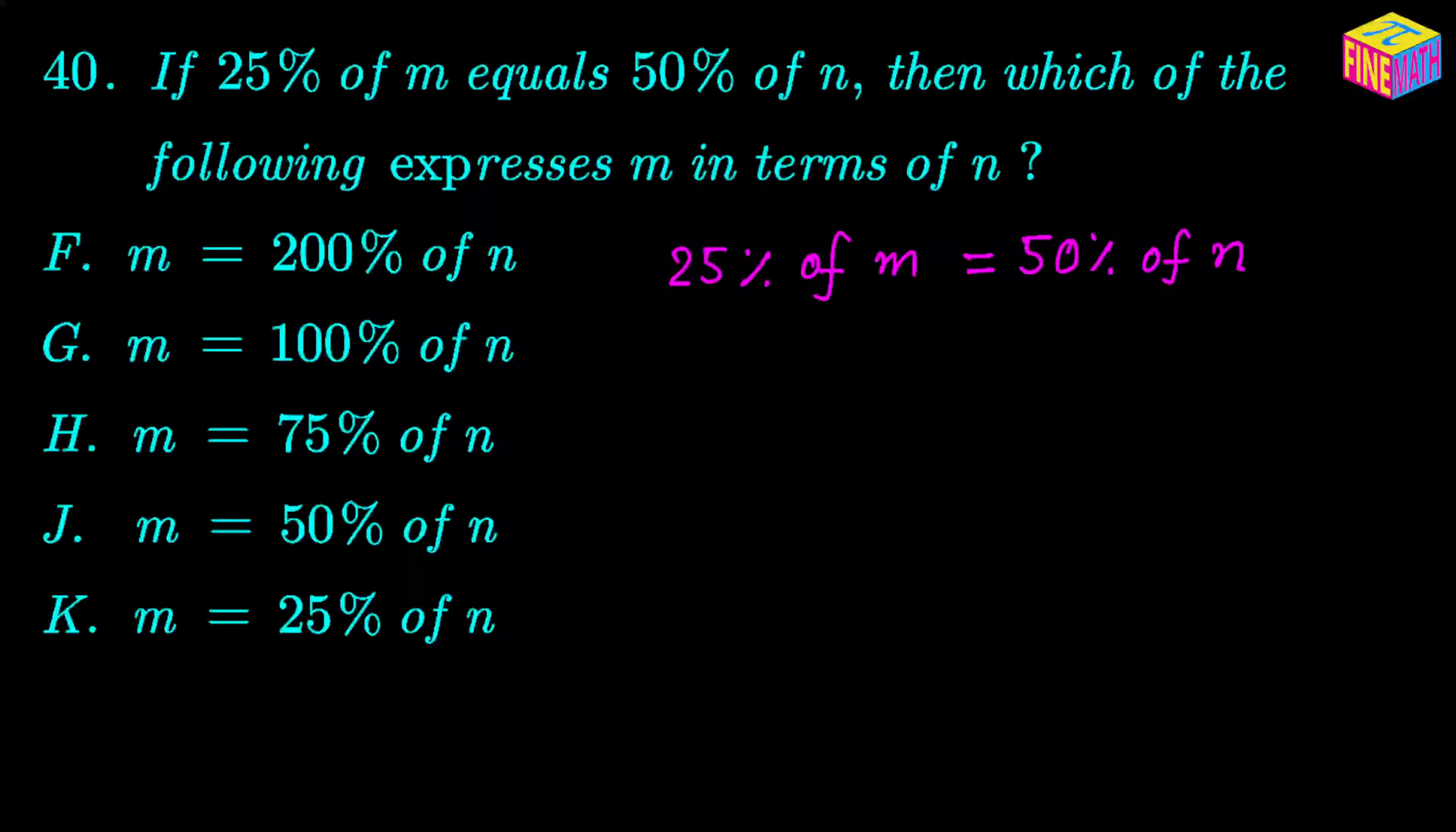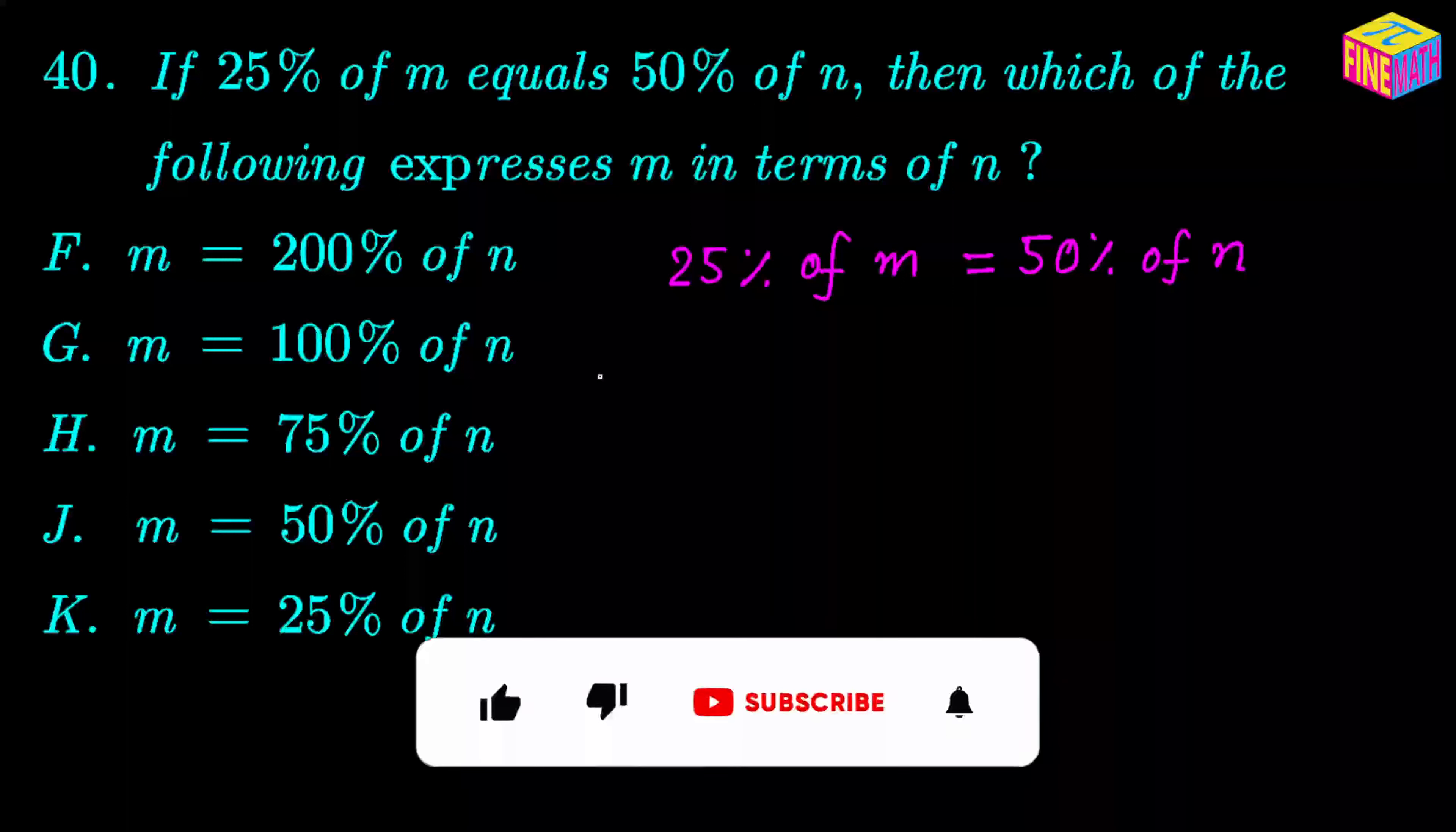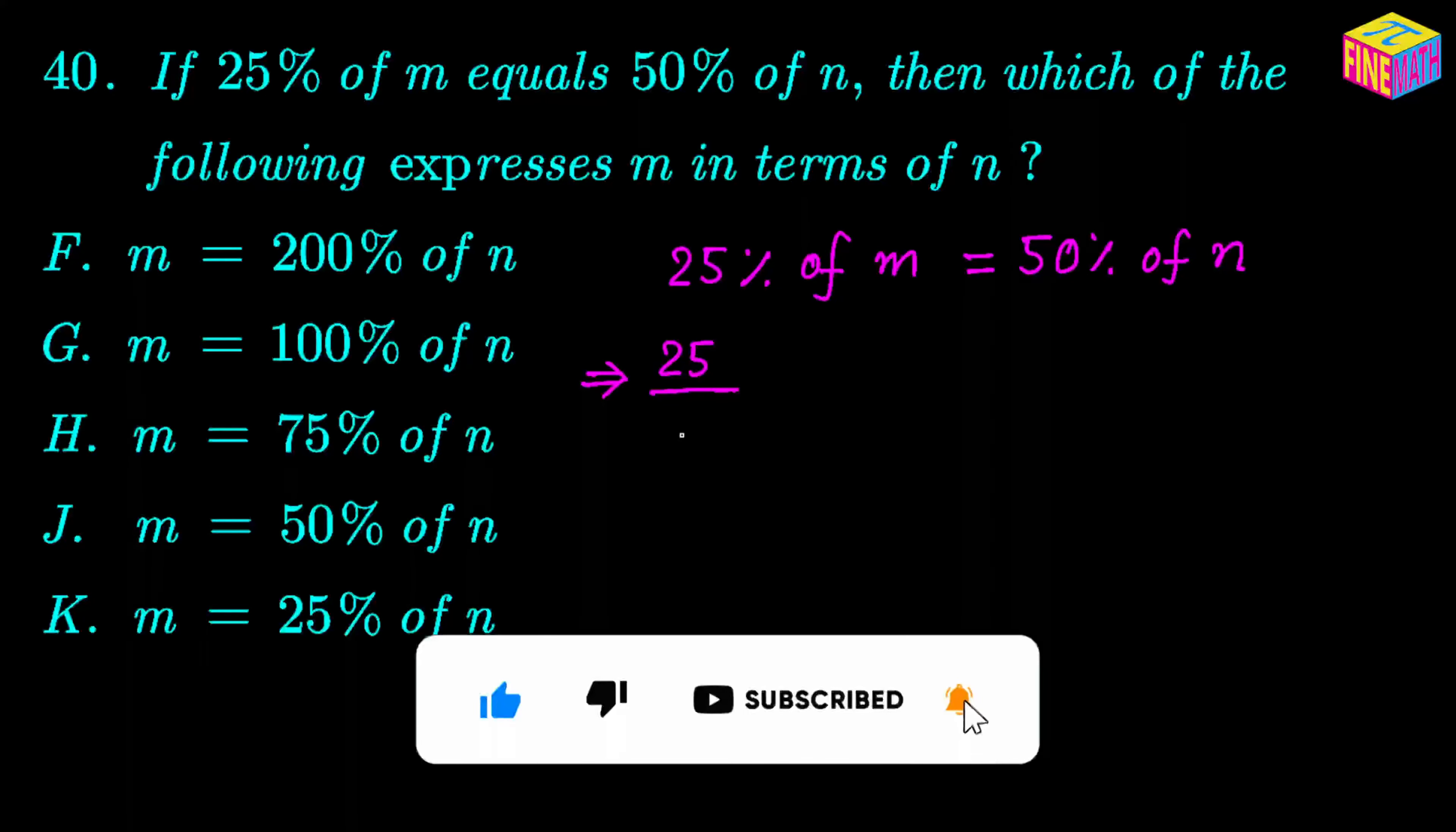Before we proceed with the solution, we need to understand a couple of things here. Percent can be written as divided by 100. 25% means 25 in 100, 25 out of 100. So 25% can be written like this, that is 25% meaning per 100.